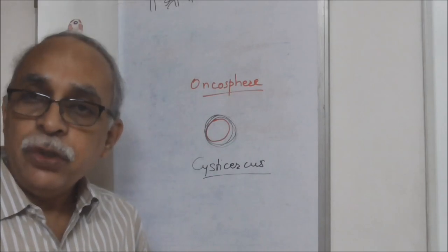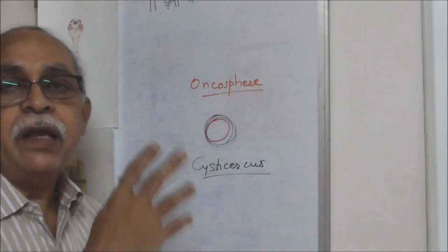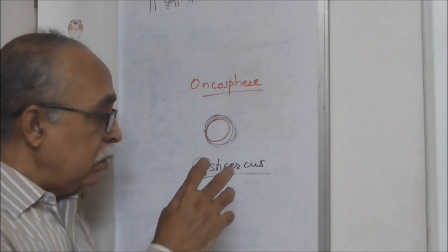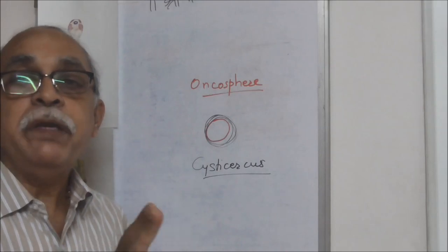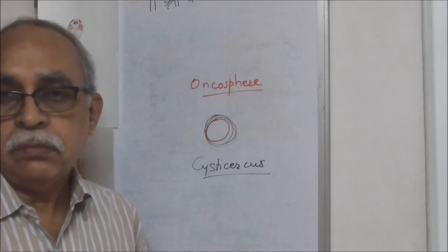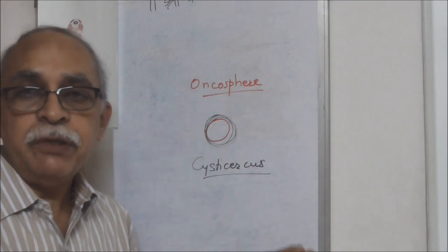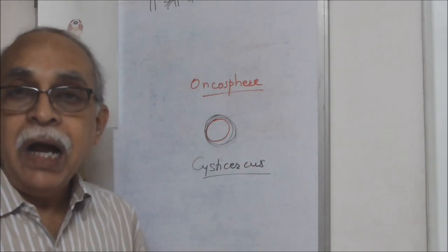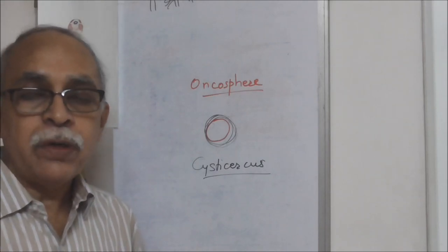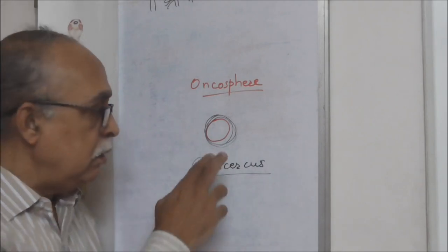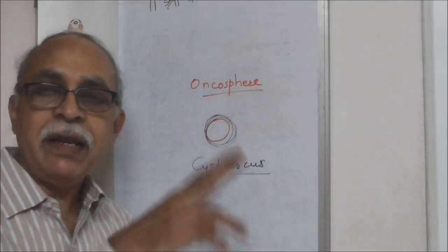This is how the life cycle continues — if an adult develops in the intestine, it releases gravid proglottids and the infection continues. The primary host is human being and the secondary host could be a pig or any herbivore. Through undercooked pig meat — pork — oncospheres can be transmitted into another human being, another definitive host, and the life cycle continues.